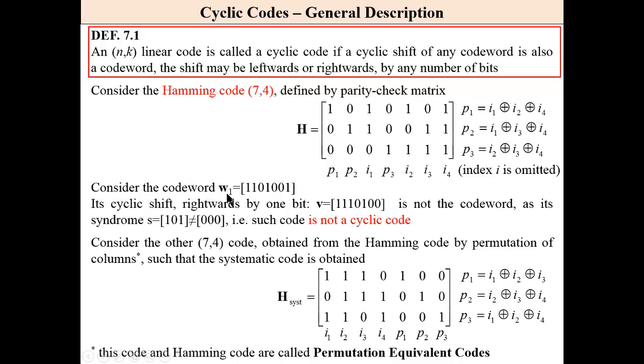Consider a codeword, which is presented here. Its cyclic shift rightwards by one bit gives this word, which is not a codeword. Its syndrome is different than zero. Then this code, Hamming code (7,4), is not a cyclic code.